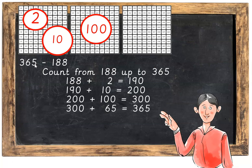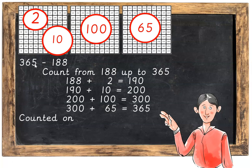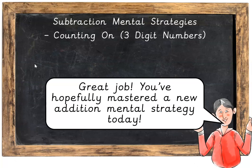We've counted on so far 2 plus 10 which is 12, plus 100 which is 112, plus 65 is 177. So 365 take away 188 is equal to 177. That's our final answer again. Great job.